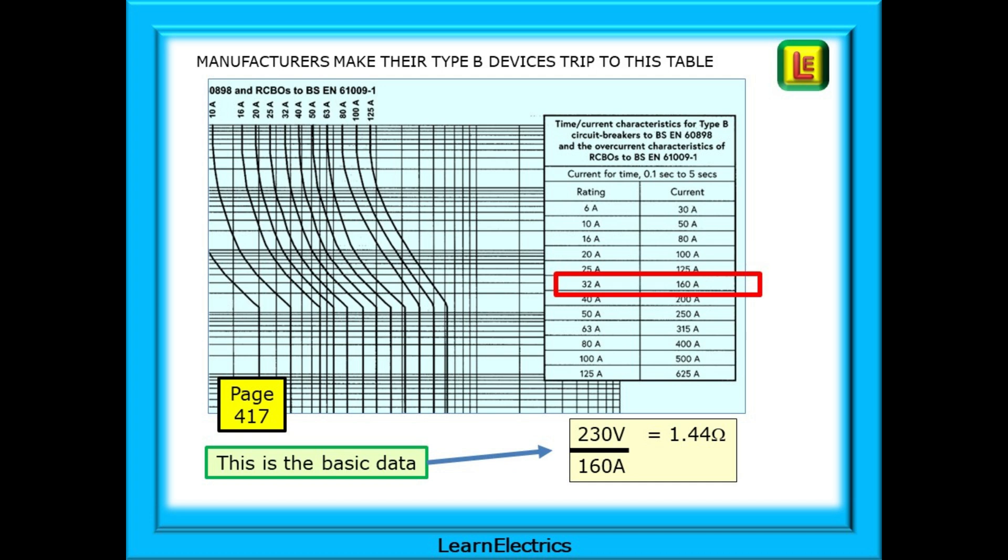Using simple Ohm's law, we have 230 volts divided by 160 amps to give us a starting point for ZS of 1.44 ohms. And if we didn't have to worry about voltage fluctuations or temperature changes, then this would do. But we must make allowances for them, so we now need to do something more with this 1.44 ohms.